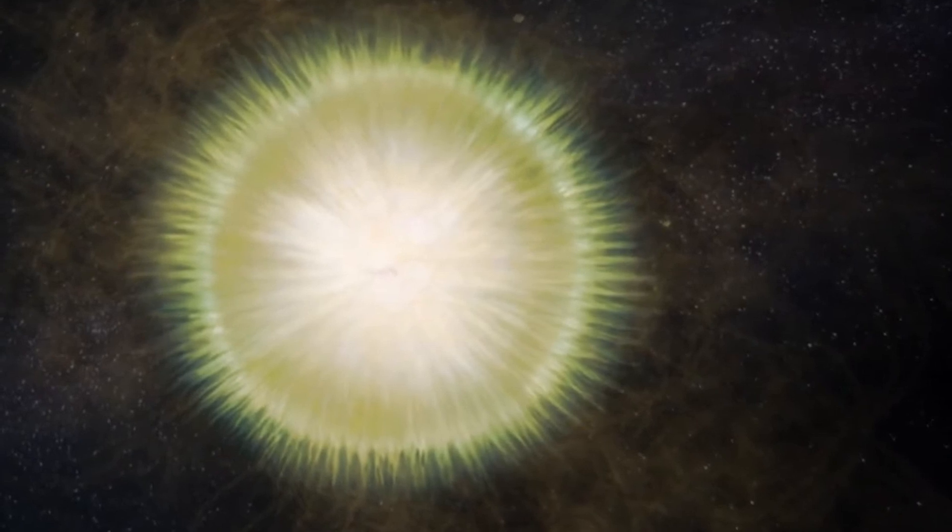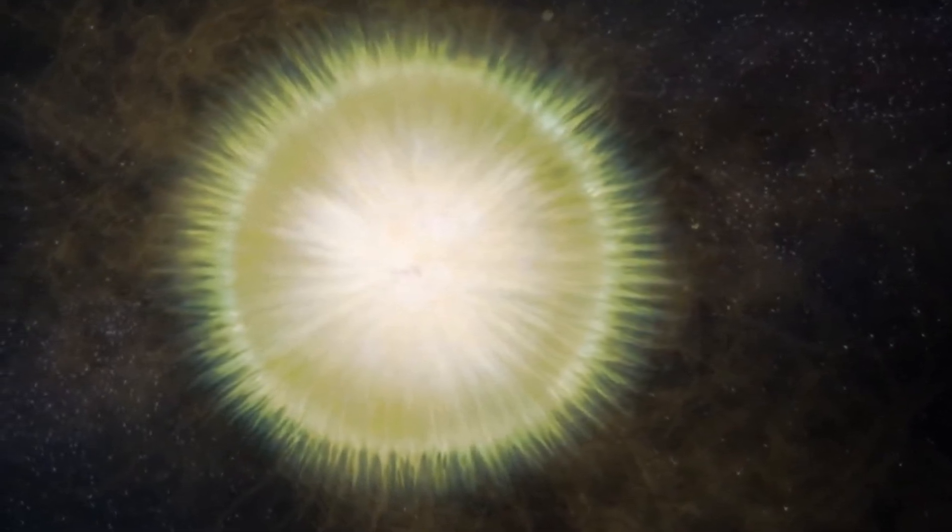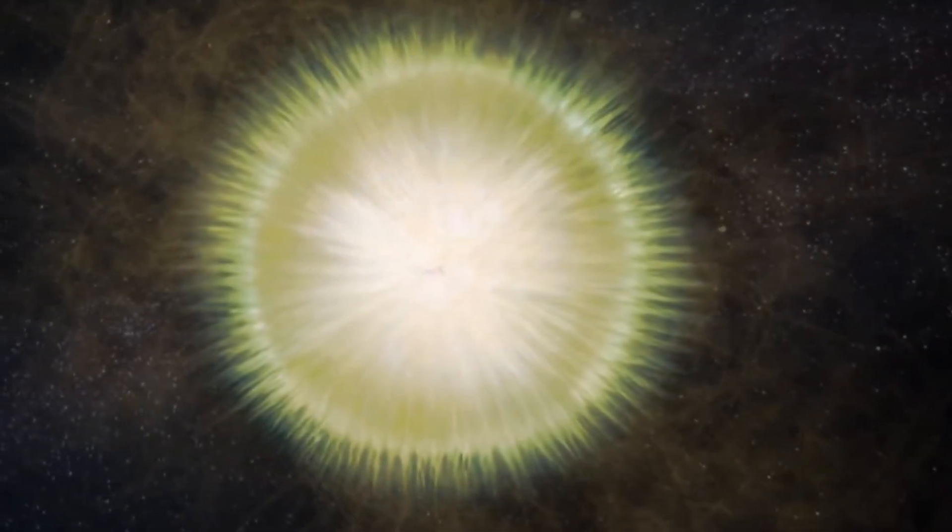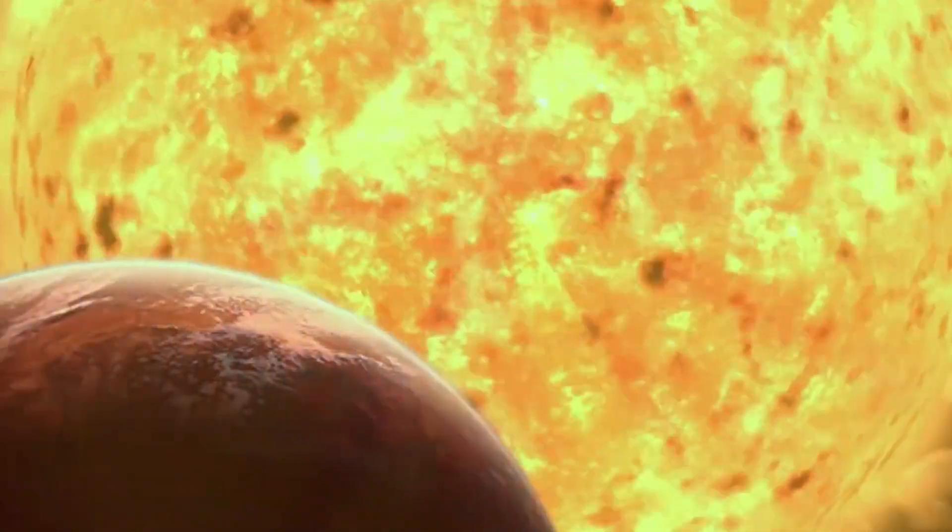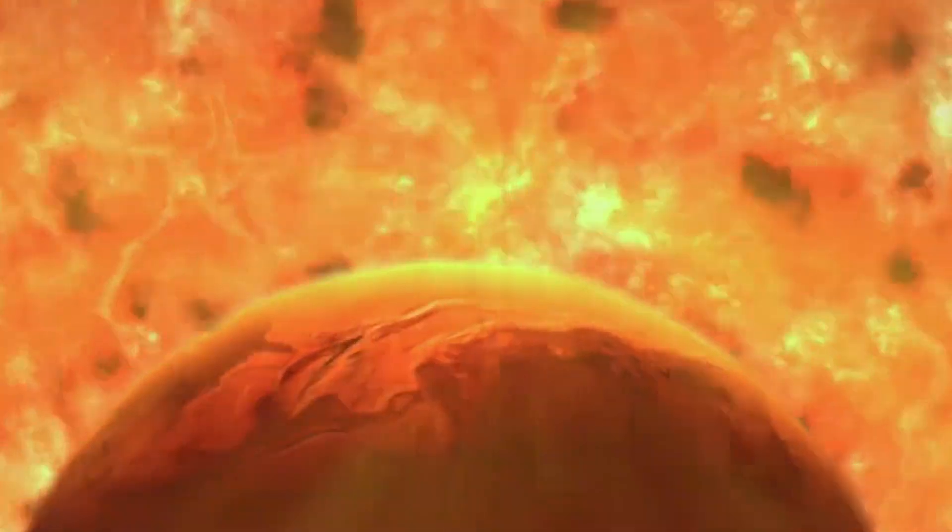Procyon A is a relatively young aluminum star, about 1.5 times the mass of the Sun, and has a surface temperature of about 7,700 K.